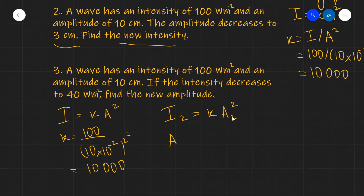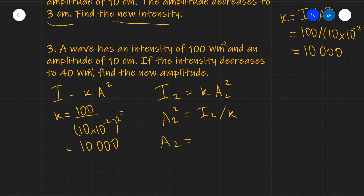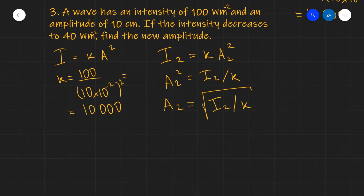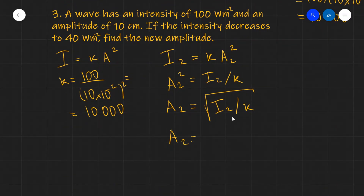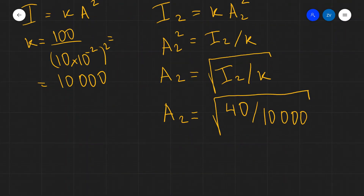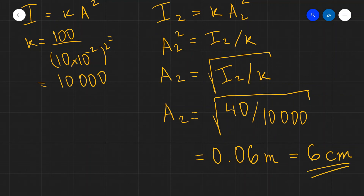A₂ squared equals I₂ divided by k, so the new amplitude A₂ equals the square root of I₂ divided by k. Substituting the numbers, A₂ equals the square root of 40 divided by 10,000, which is approximately 0.06 meters, or 6 centimeters. That is our new amplitude.